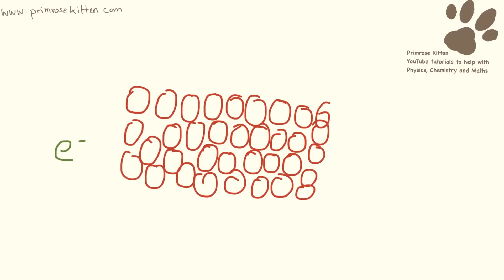And here we have our electron and that's what's going to be flowing through and it needs to wiggle its way through all of these different particles and that's how electrical charge flows.